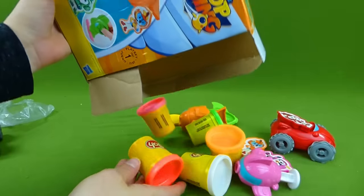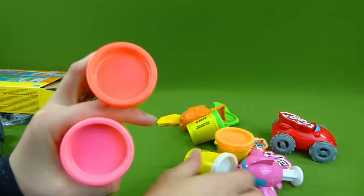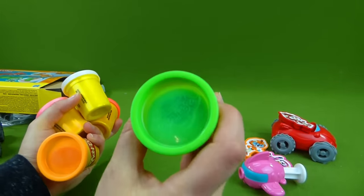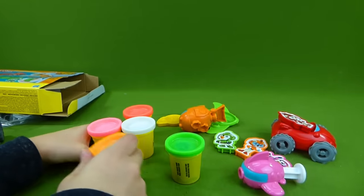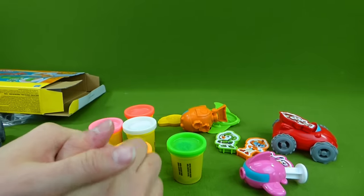We've got five different colors of Play-Doh. Now we've just got to figure out how to get it out. There we go. And we've got pink and red, white, orange, and green. So all the colors we need to create some really fun stuff. So let's get started.